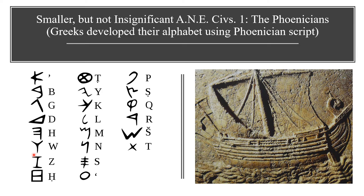They were excellent seafarers and sold their goods across the Mediterranean. Because they were traders keeping track of large numbers of goods and wares, they would have needed an easy-to-use writing system. An alphabet, in which symbols represented sounds, would be much simpler to use and learn than the notch-based cuneiform system of Mesopotamia.